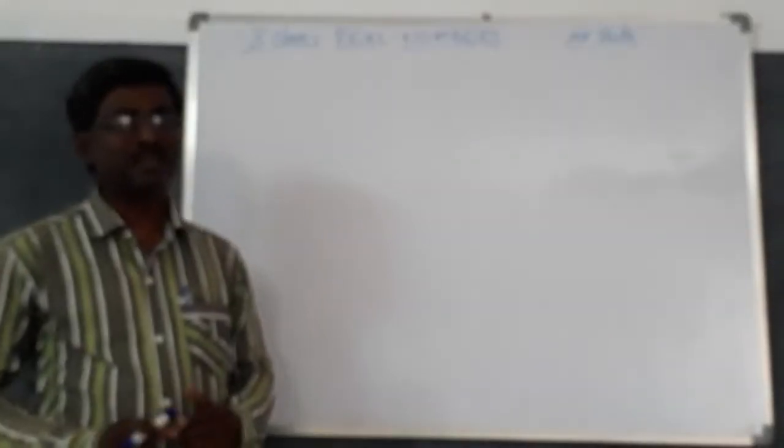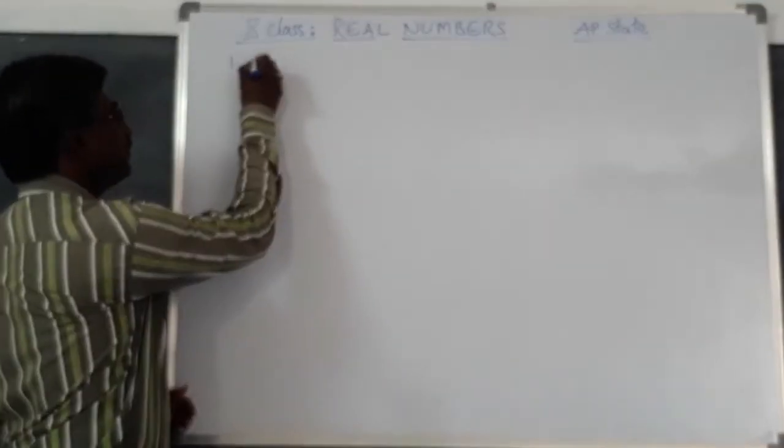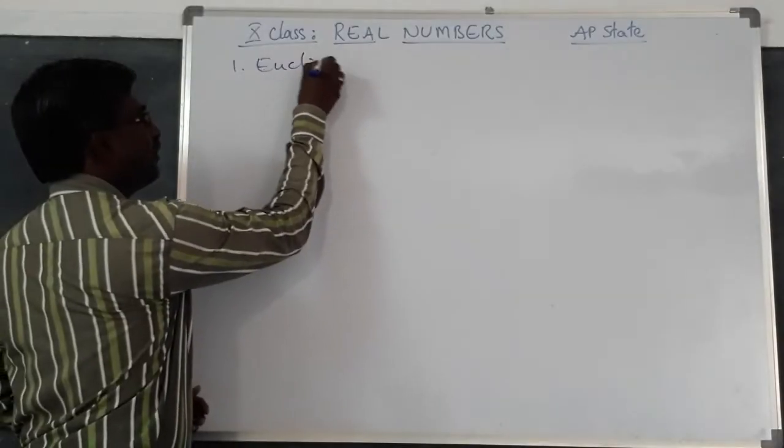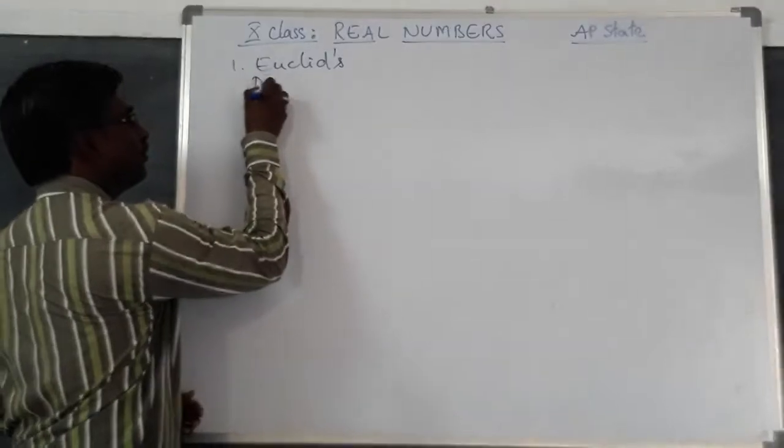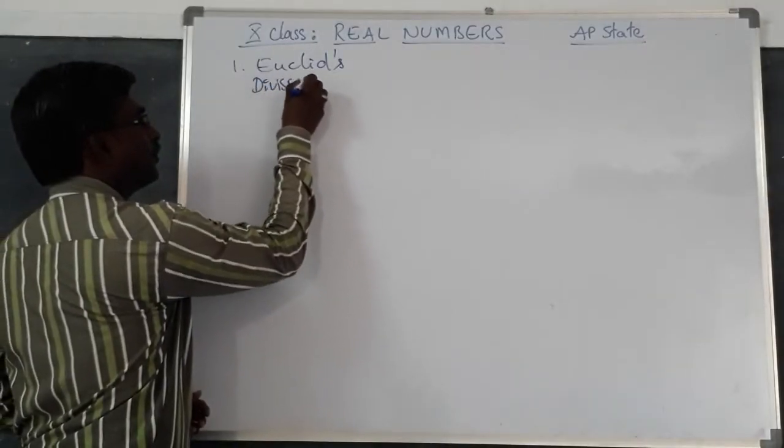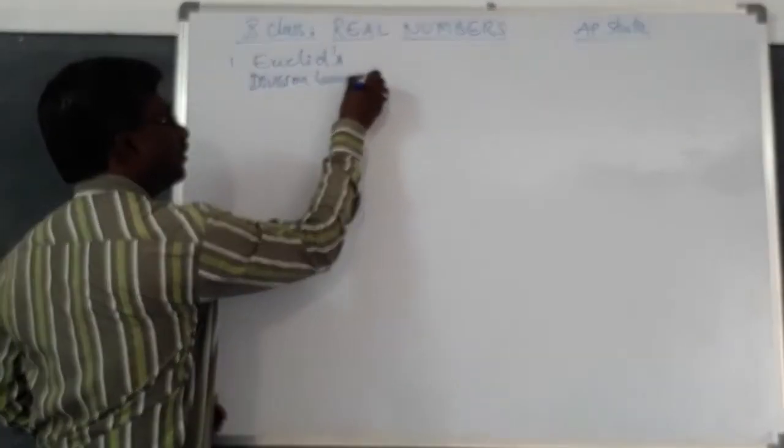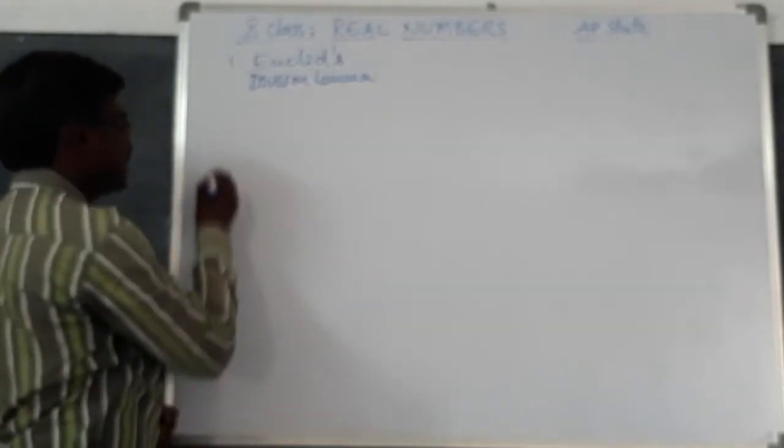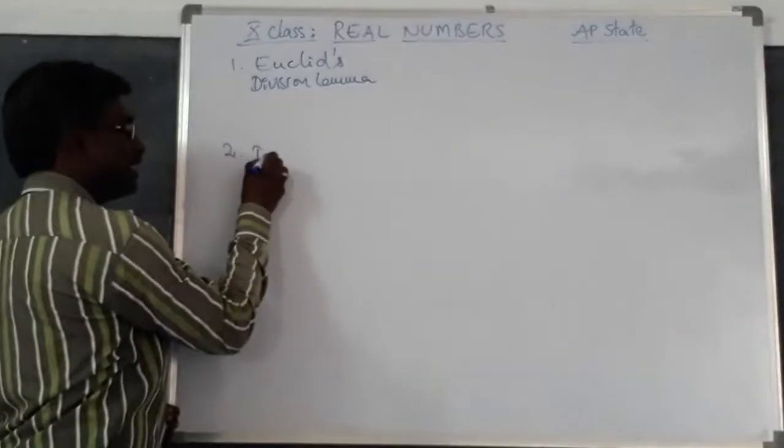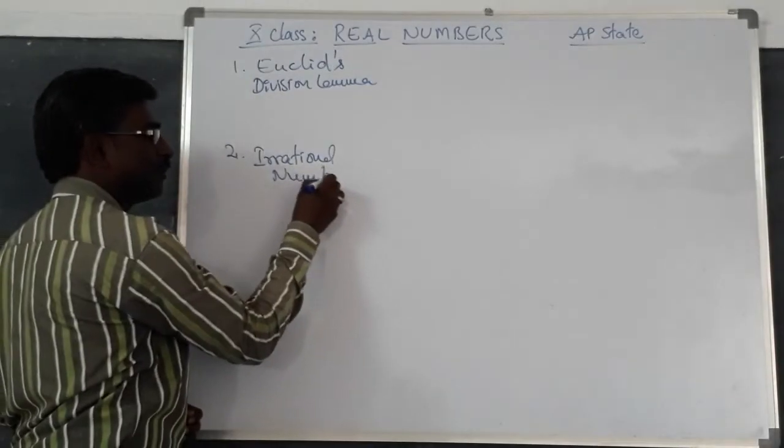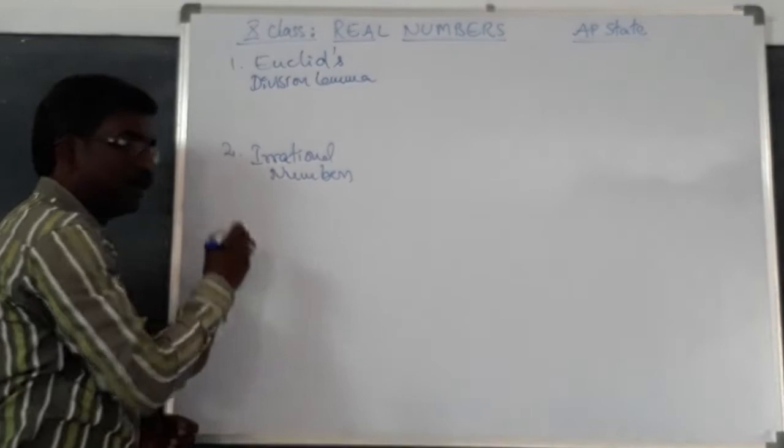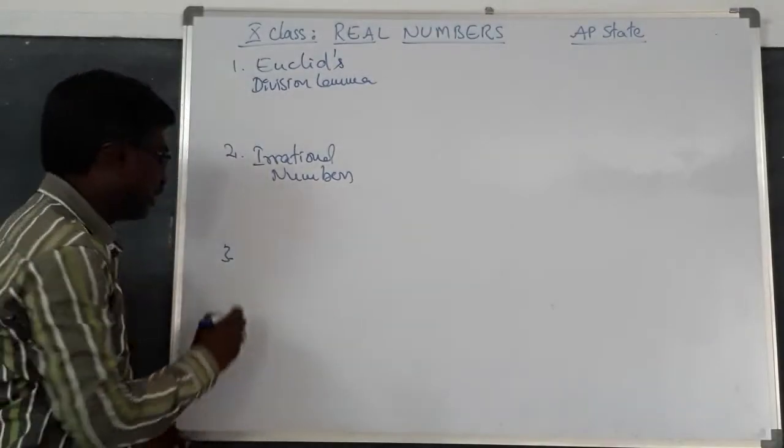So here, the total real numbers divided into three parts. First, one is about Euclid's Division Lemma with problems, and second one about irrational numbers, and finally third one is about logarithms.